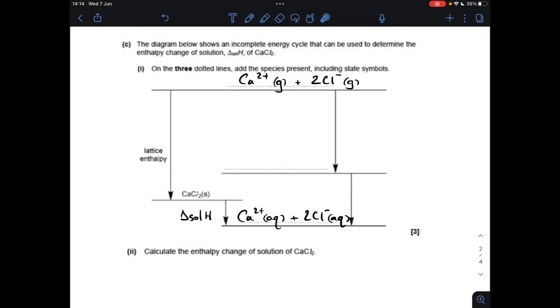So these two arrows here represent the enthalpy change of hydration of the positive and negative ions. So I normally do the positive ion first, so that means I need a Ca²⁺ aqueous on this line, but I'm leaving the two chloride ions as gaseous ions. So that's the enthalpy change of hydration of the calcium two plus, and then this change here is the enthalpy change of hydration of the chloride ions.